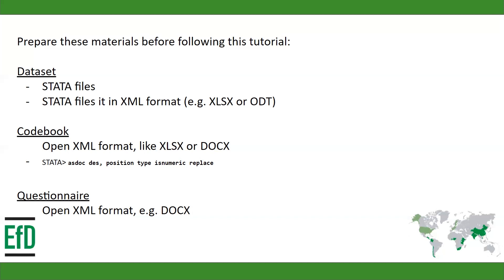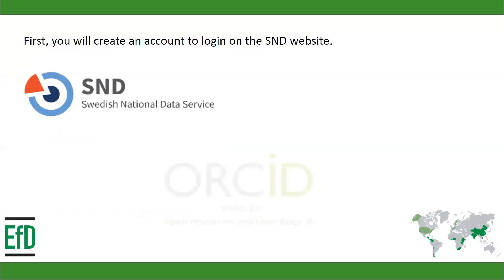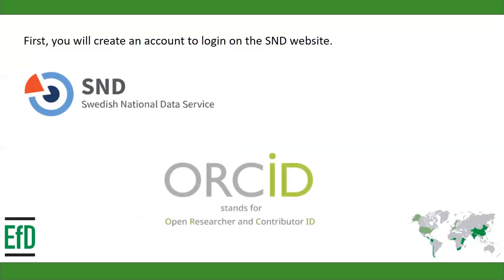And finally, the questionnaire that you use for the study. Please save this one in XML as well — docx is fine. So let's start by creating an account on the SND website. For that, you will need an ORCID number. ORCID is Open Researcher and Contributor ID — a unique digital identifier for individual researchers. If you want to create one now, you can click on the ORCID logo in this video. If you already have one, let's move on and register in the SND website.